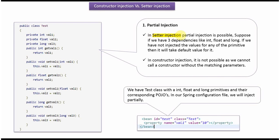In setter injection, partial injection is possible. Suppose if we have not injected the values for any of the primitives in our Test class which has int, float and long dependencies, then it will take default values for it. In constructor injection, it is not possible as we cannot call the constructor without the matching parameters.